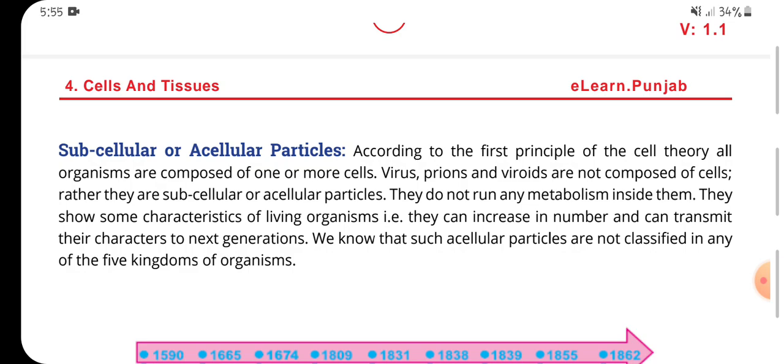According to the first principle of cell theory, all organisms are composed of one or more cells. However, viruses, prions, and viroids are not composed of cells — rather, they are subcellular or acellular particles. They do not carry out any metabolism. They show some characteristics of living organisms in that they can increase in number and transmit their characters to the next generation. Such acellular particles are not classified in any of the five kingdoms of organisms.